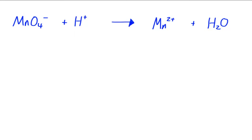In this video I'm going to be balancing another ionic equation. In this case, MnO4 minus is reacting with H plus to form Mn2 plus and H2O.